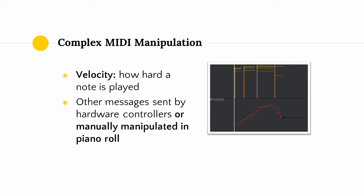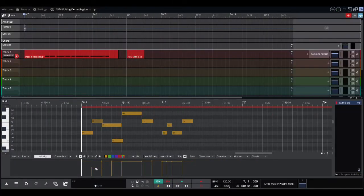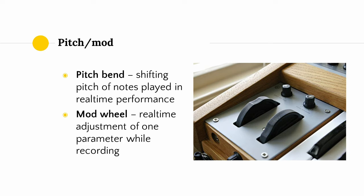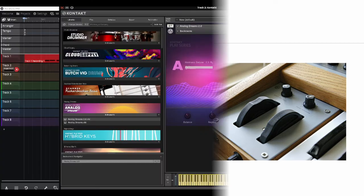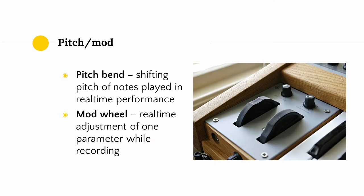MIDI data can convey more information than just what notes are being played and when. For example, MIDI messages can convey information about the velocity of notes — that is, how hard they are played. Most MIDI keyboards will automatically emit velocity information as they are used to record MIDI data. However, the piano roll can also be used to manually edit the velocity of notes. Besides note velocity, there are many other MIDI messages which can be emitted by hardware components connected to a MIDI controller and manually manipulated using a typical piano roll. Pitch bend wheel messages are emitted by the pitch bend wheel on a MIDI keyboard, acting as an easy way for a musician to shift the pitch of what is being played at the moment.